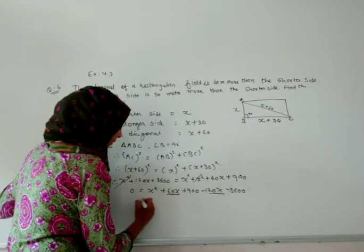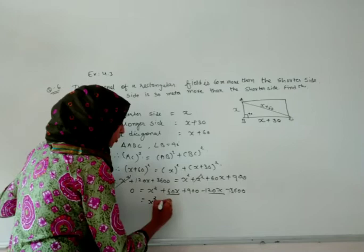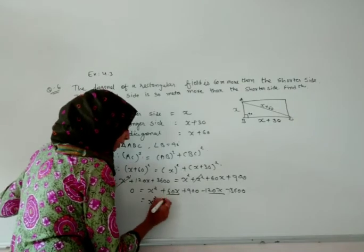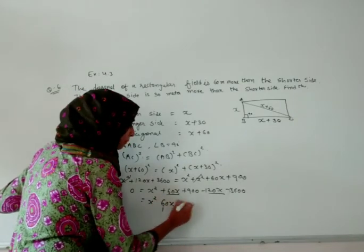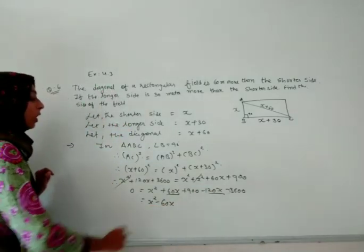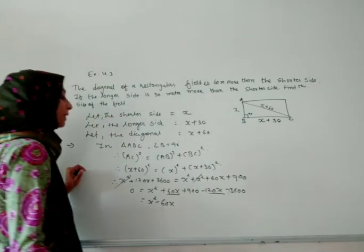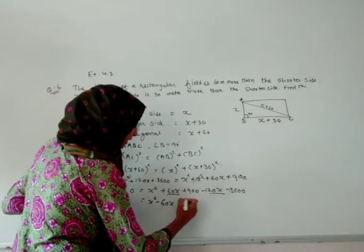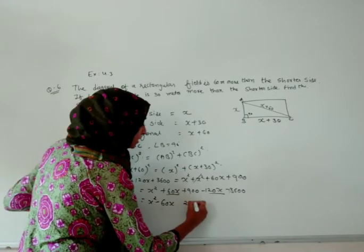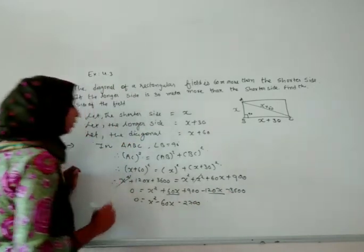We have to solve it. X squared will remain. 120 minus 60 will become 60x only, but the symbol will be of the greater number, that is minus. If we subtract, we will get 2700, and this symbol will be minus, and that equals 0.